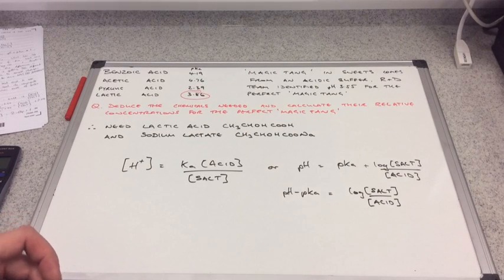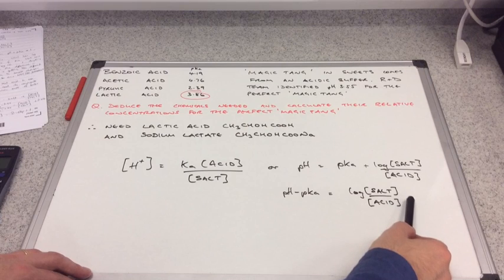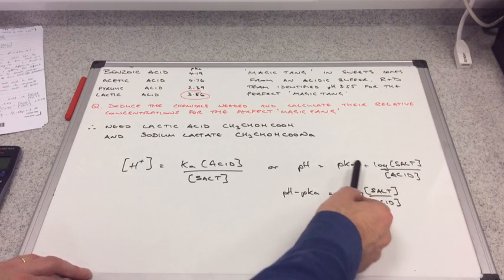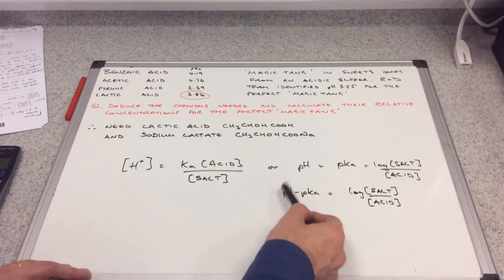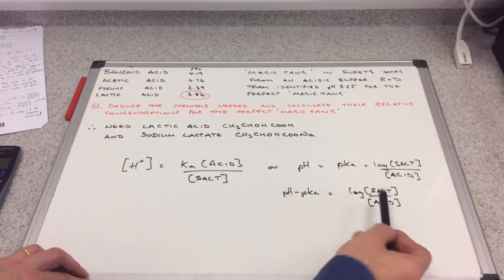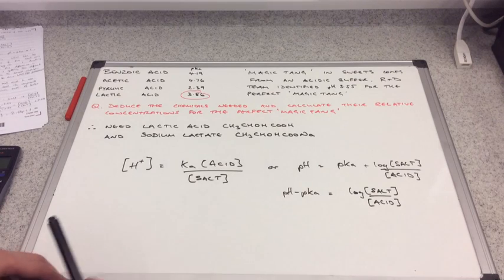If you think where are we heading with this question, we want to know the relative concentrations of the two components, the salt to acid. I've got rid of the pKa by taking it over the other side and subtracting it. That's going to give me log of salt over acid, and then I just need to inverse log and I'll get my answer.